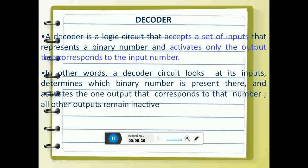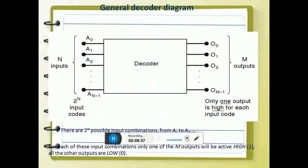Now let us see what a decoder is. It is a logic circuit which accepts a set of inputs that represents a binary number and activates only the output that corresponds to that input number. It determines which binary number is present and activates the corresponding output — it is decoding. It has n inputs and m outputs; 2 to the power n input combinations are available, but only one output is high for each of the inputs.